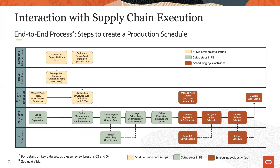Before being able to generate a schedule, it is necessary to perform several tasks, and this diagram outlines those. The beige and green colored boxes are setup activities, while the red boxes represent the typical scheduling cycle activities.